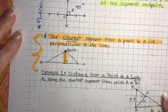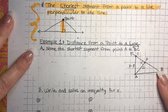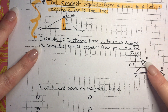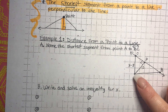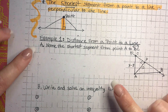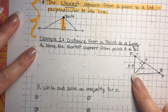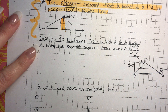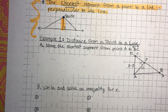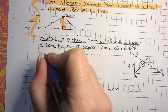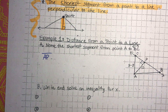Example 1 is distance from a point to a line. Here we have a line and a point. Part a says: name the shortest segment from A to line BC. From A to line BC, we have a segment here, a segment here, and a segment here. The shortest segment is the one that is perpendicular, and if you said that AP is the shortest segment, you would be correct.